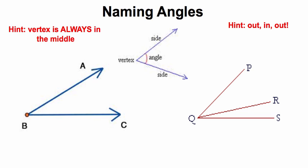The next part of this lesson is naming angles. We always want to make sure that we're naming angles correctly so people know which angles we are talking about. The vertex is always going to be in the middle. A vertex, if you don't know, is the part where the two sides of an angle meet. Those sides meet at what's called the vertex.